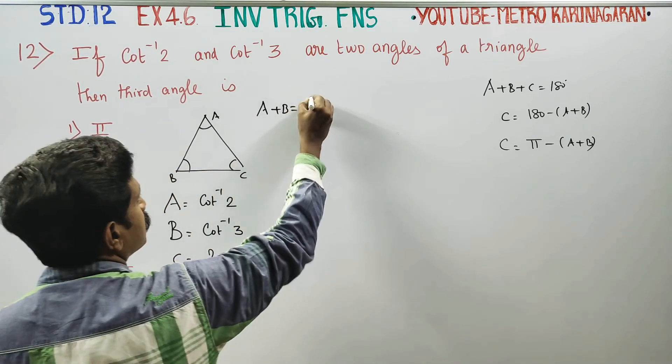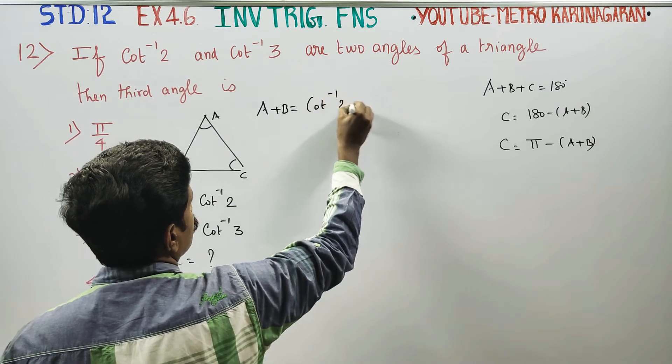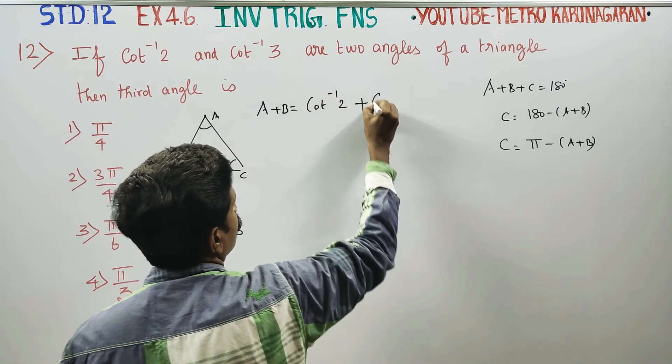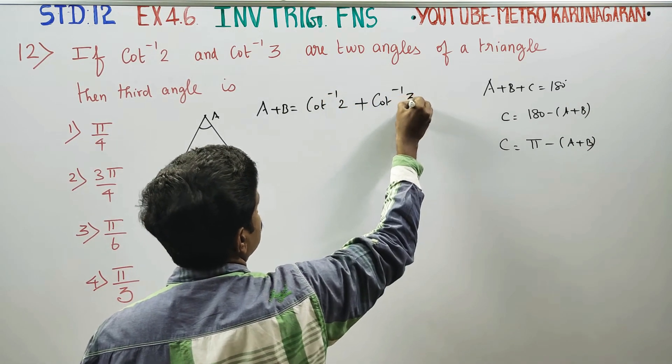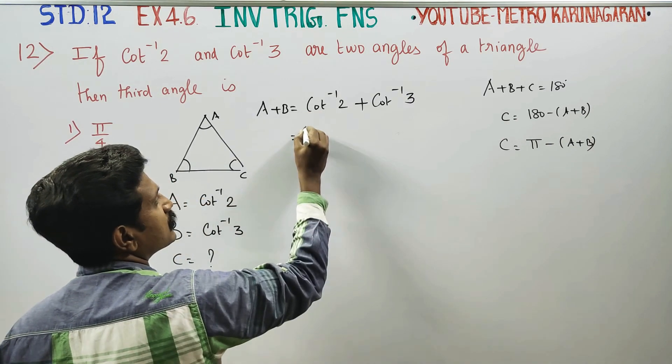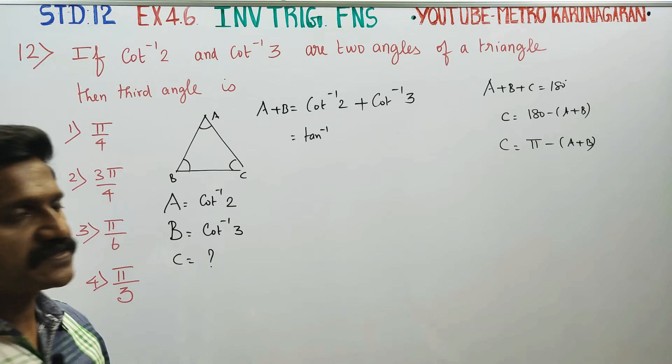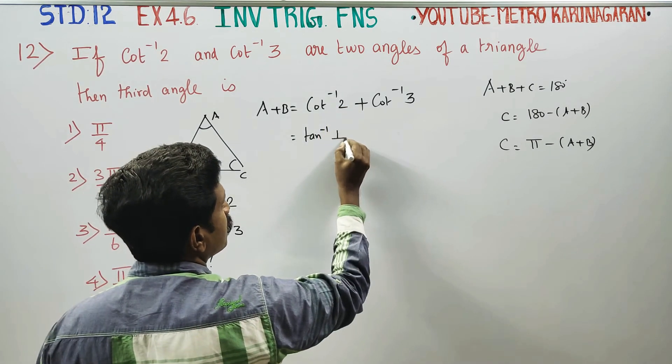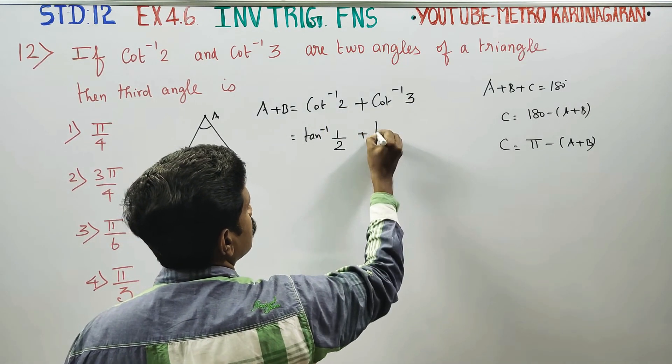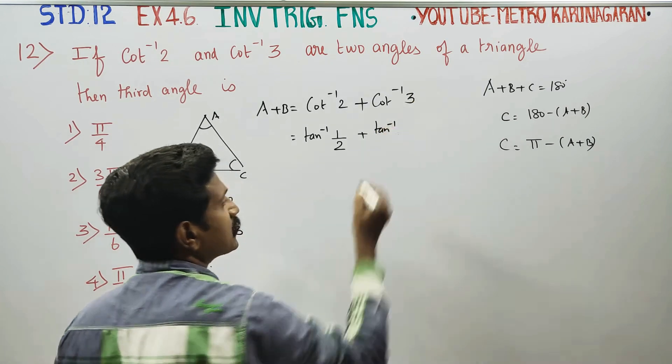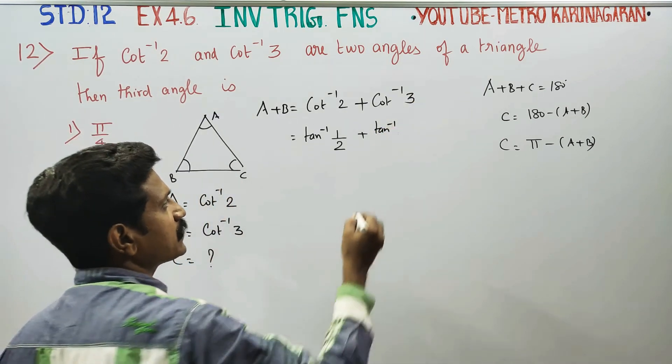A plus B is cot inverse of 2 plus cot inverse of 3. Cot inverse 2 is tan inverse 1 by 2. Cot inverse 3 is tan inverse 1 by 3.